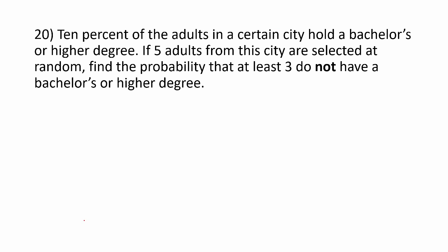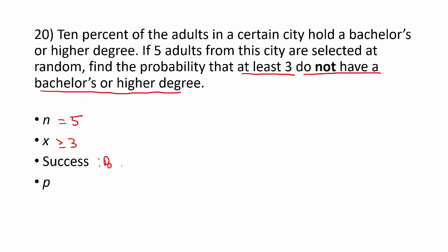One more: 10% of the adults in a certain city hold a bachelor's or higher degree. If 5 adults from this city are selected at random, find the probability that at least 3 do not have a bachelor's or higher degree. Another binomial problem. n is 5, and we're looking for x to be at least 3, so x ≥ 3. We're counting the number of people that do not have a bachelor's or higher degree, so the success is 'do not have the degree.' We're told 10% hold the degree, so the other 90% do not — we'll use 0.9 for p.